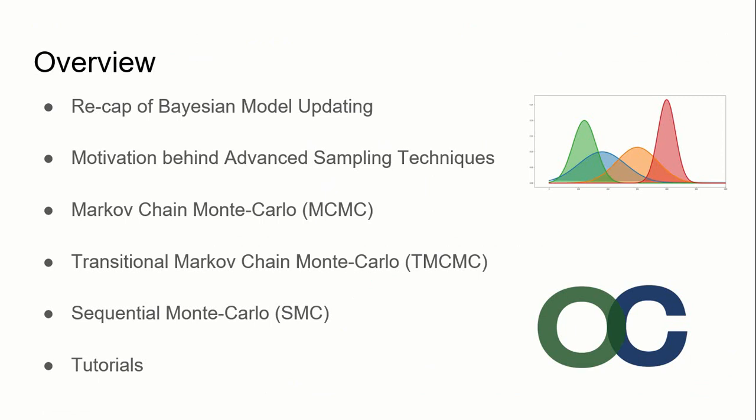From there, I'll give a detailed explanation behind the workings of the following advanced sampling techniques: Markov Chain Monte Carlo (MCMC), Transitional Markov Chain Monte Carlo (TMCMC), and Sequential Monte Carlo (SMC) Sampler. I'll then give a brief introduction to the tutorials available on OpenCossan, where users can appreciate the implementation of these three advanced sampling techniques used to do Bayesian model updating in the engineering context.